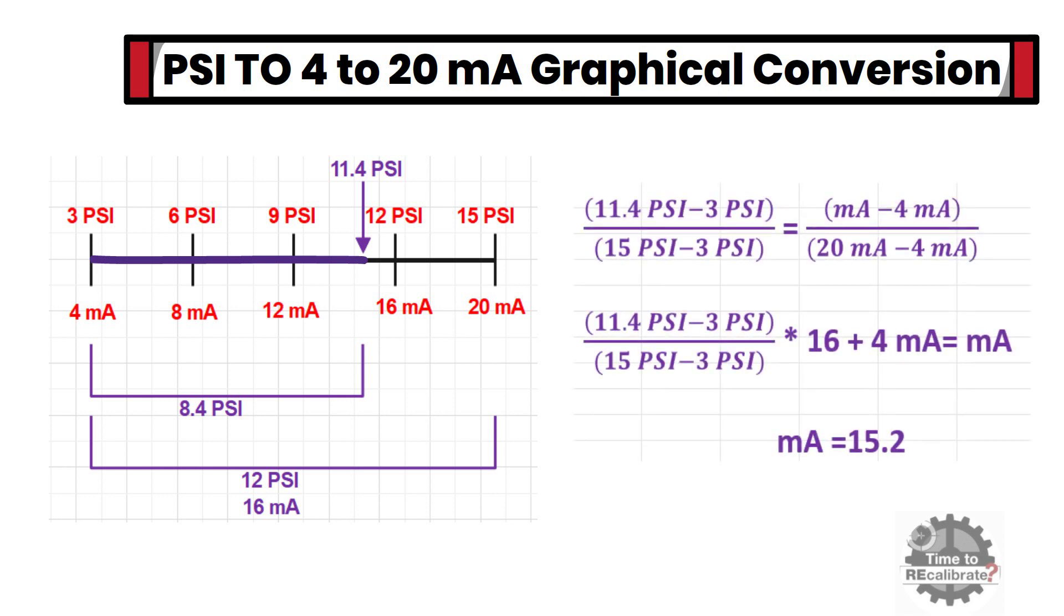So, to convert 11.4 pounds per square inch signal into milliamps, divide 8.4 pounds per square inch by 12 pounds per square inch and multiply it with 16 mA. And, add 0 offset of 4 mA and do simple math calculation. You will get 15.2 mA. In other words, 11.4 pounds per square inch signal is equivalent to 15.2 mA signal.